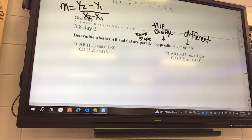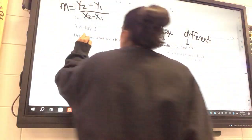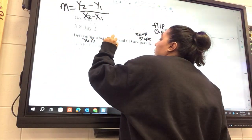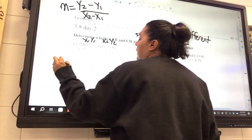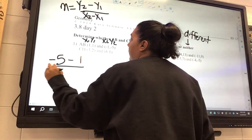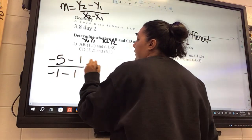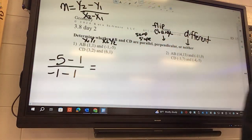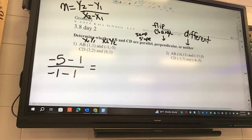Okay, so if we look at the very first one we're going to do AB first. We're going to say x1, y1, x2, y2. So it's going to look like negative 5 minus 1 over negative 1 minus 1. Was anybody not here yesterday?